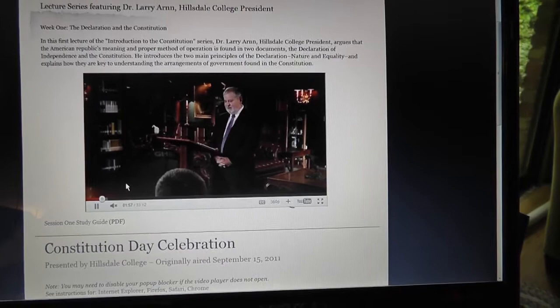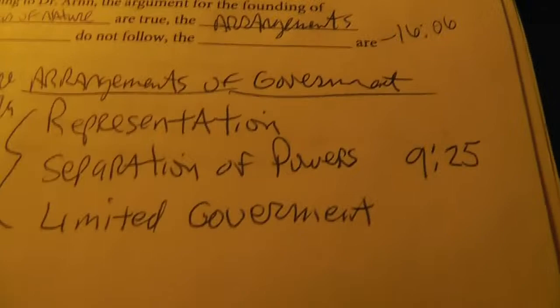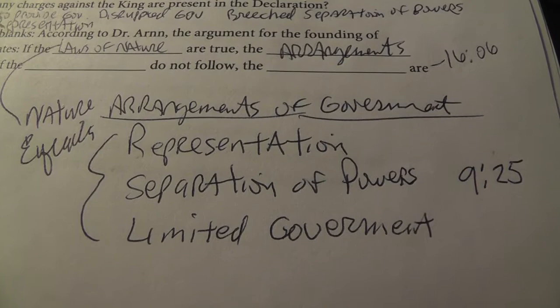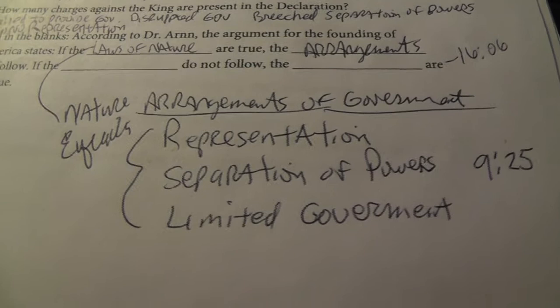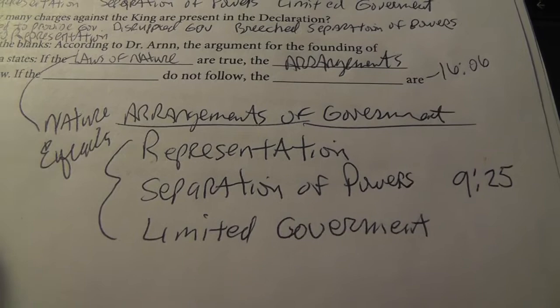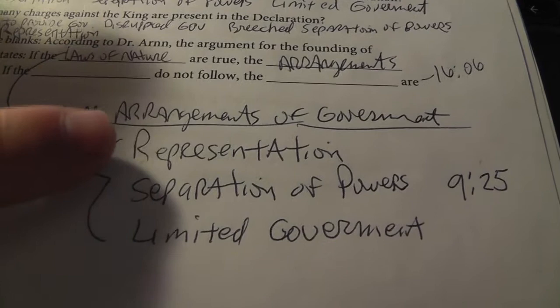It's kind of interesting because I was looking at my notes where he was talking about the concept of arrangement of government that the Constitution sets up, which is basically, as we know, representation, separation of powers, and limited government. And it's interesting to look at today's government and realize how all of these have been violated in one way or the other.